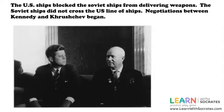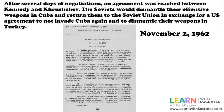The Soviet ships did not cross the U.S. line of ships. Negotiations between Kennedy and Khrushchev began, and after several days an agreement was reached. The Soviets would dismantle their offensive weapons in Cuba and return them to the Soviet Union in exchange for a U.S. agreement to not invade Cuba again and to dismantle their weapons in Turkey. This happened on November 2nd, 1962.